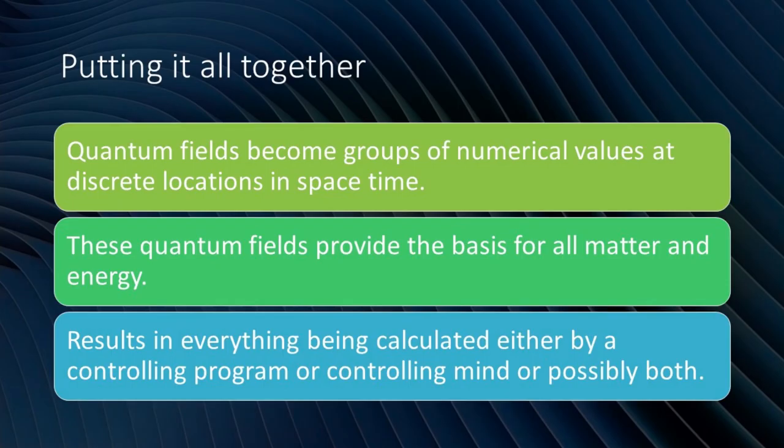Quantum fields become groups of numerical values at discrete locations in space-time. These quantum fields provide the basis for all matter and energy. It results in everything being calculated either by a controlling program or a controlling mind, or possibly both.